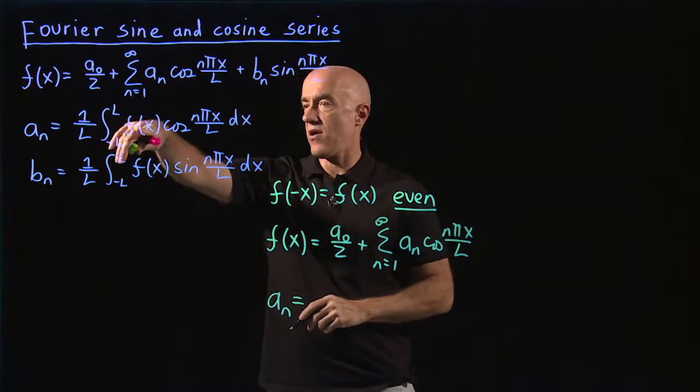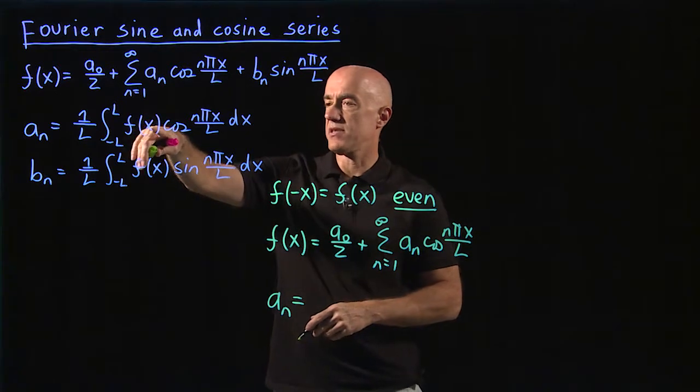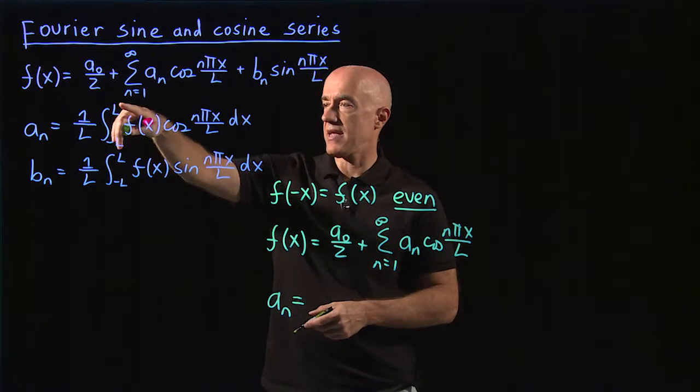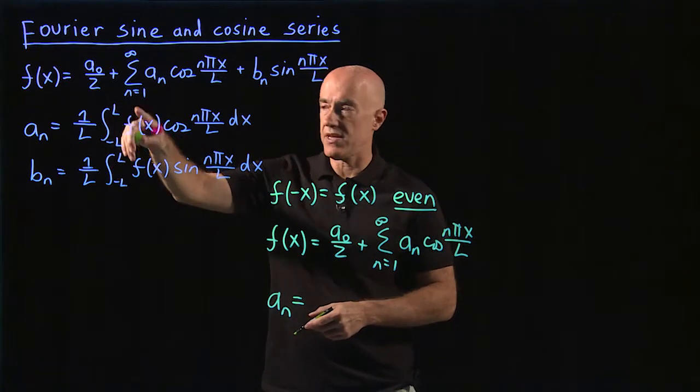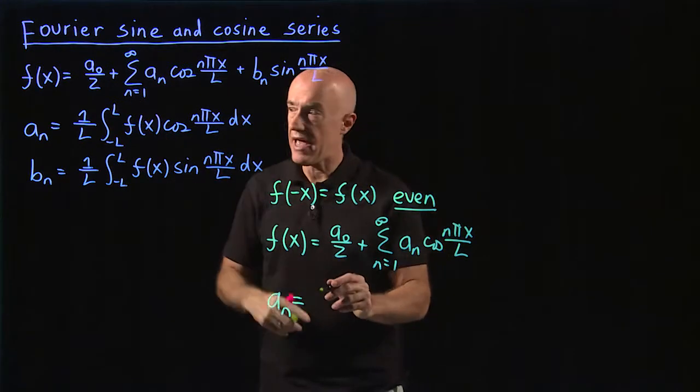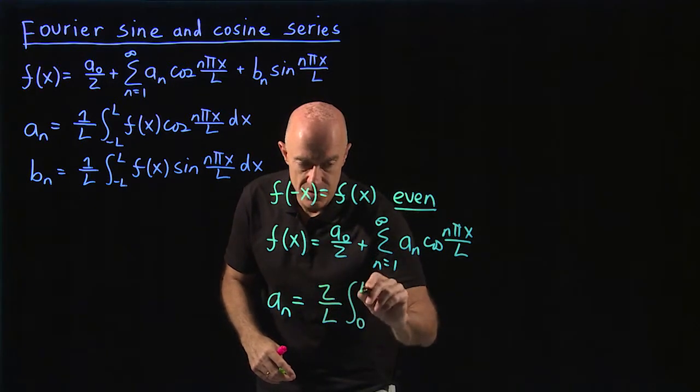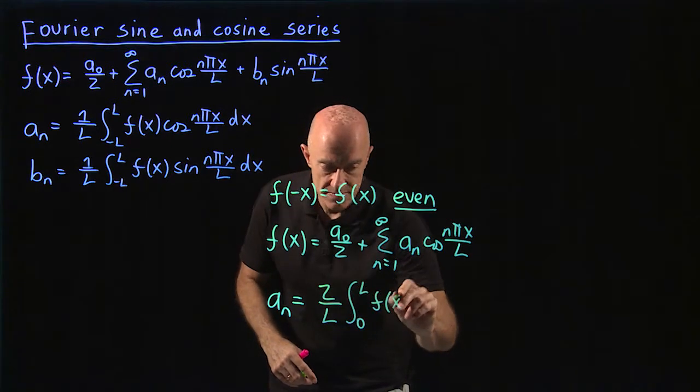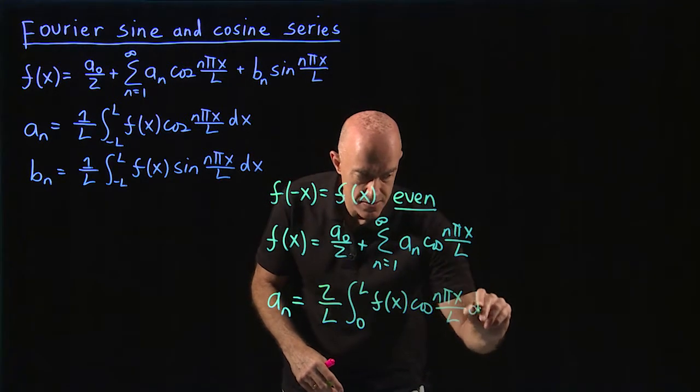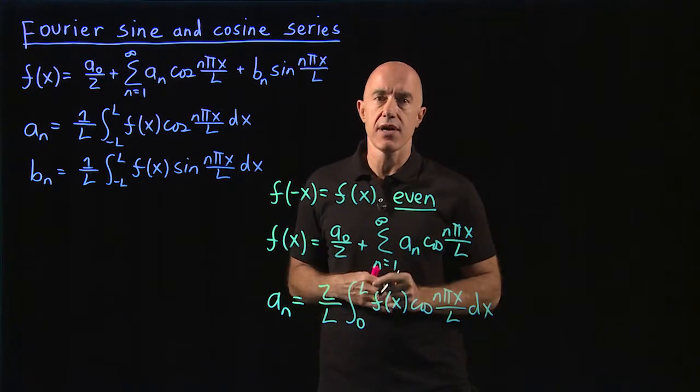And these a coefficients we can simplify slightly. So now f is even, cosine is an even function. An even function times an even function is an even function. And then instead of integrating from minus L to L, we can integrate from 0 to L and multiply the integral by 2. So we get a sub n equals 2 over L times the integral from 0 to L of f of x cosine n pi x over L dx. And this is called the Fourier cosine series.